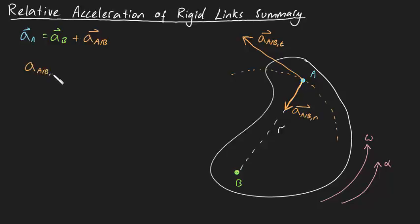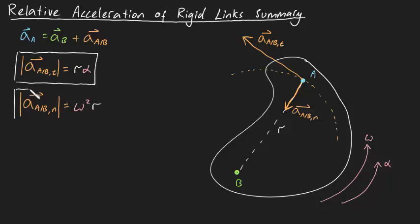The acceleration of A relative to B in the tangential direction is equal to r times alpha. The acceleration of A relative to B in the normal direction is equal to omega squared times r.